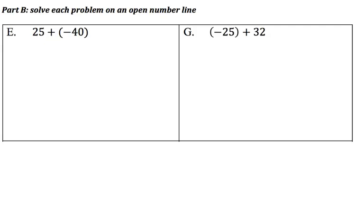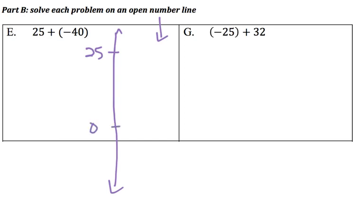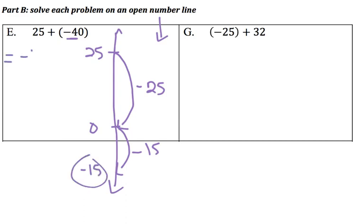Let's review using the open number line to solve some integer problems. We have 25 plus negative 40. This is an adding weight problem — it's like we're starting at 25 and then adding 40 pounds of weight, so we're going to go down 40. I'm going to use the go-to-a-friendly-number strategy: go down 25, and then since I want to go down a total of 40, I have 15 left to go down, which brings me to negative 15. That's why the answer is negative 15.